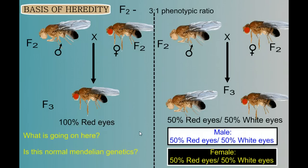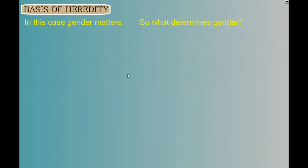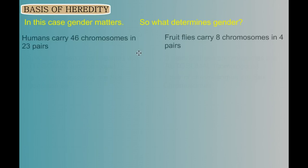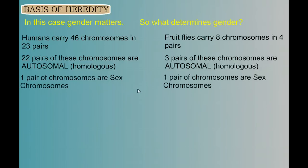So what's going on here? Is this normal Mendelian genetics? It seems in this case that gender matters. So what determines gender? We need to take a detour. In humans, we have 46 chromosomes in 23 pairs; fruit flies have 8 in 4 pairs. We have 22 chromosomes that we call autosomal — they're homologous. No matter if you're male or female, you get 2 of every one of these first 22 pairs. But the last pair is what we call the sex chromosomes.